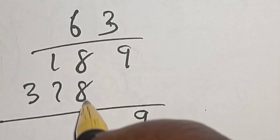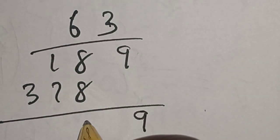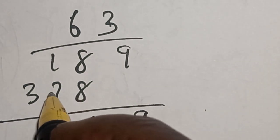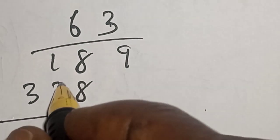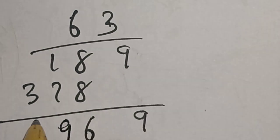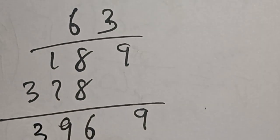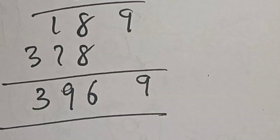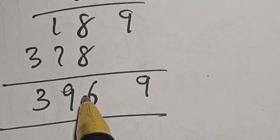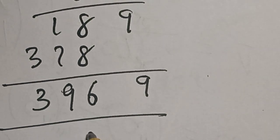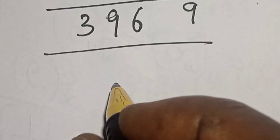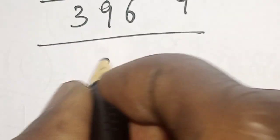9. 8 plus 8, this is 16, then remain 1. 7 plus 1, this is 8 plus 1, 9. Then here is 3. So our answer is 3969. So you can see that this is a long method. Now our shortcut is you can solve this in one second. Now let's see the shortcut.